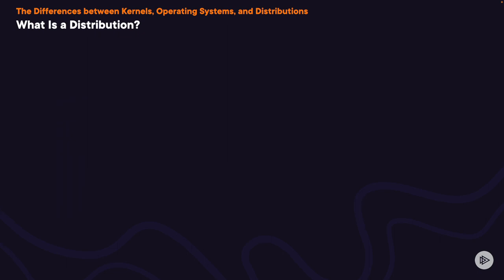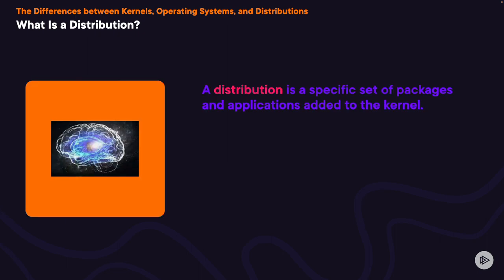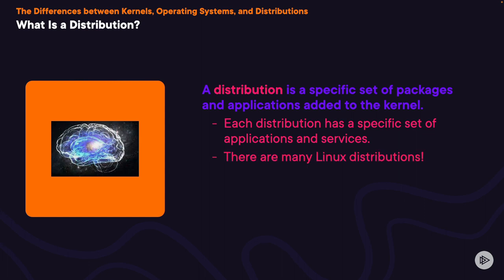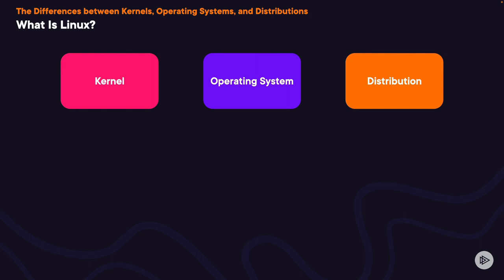What is a Linux distribution? A distribution is a set of specific software packages added to the Linux kernel — it's also an operating system. Two Linux distributions could have the same kernel but different applications and packages. There are many Linux distributions available. Linux is a kernel, an operating system, and a distribution all at the same time.